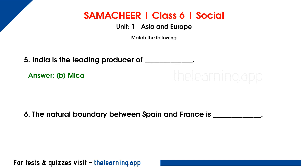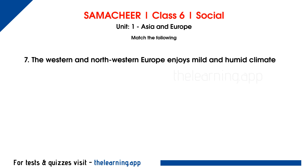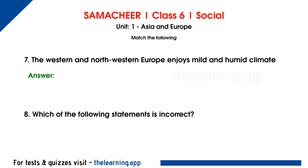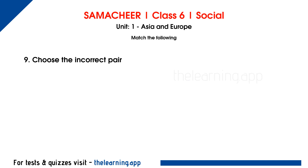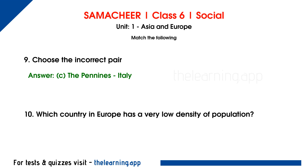Question 6: The natural boundary between Spain and France is dash. Correct answer is B, the Pyrenees. Question 7: The western and north-western Europe enjoys mild and humid climate. Question 9: Choose the incorrect pair. Correct answer is C, the Pennines — Italy. Question 10: Which country in Europe has a very low density of population? Correct answer is A, Iceland.